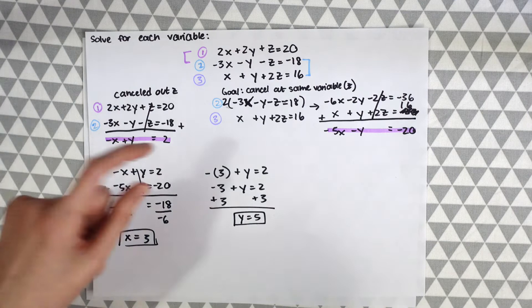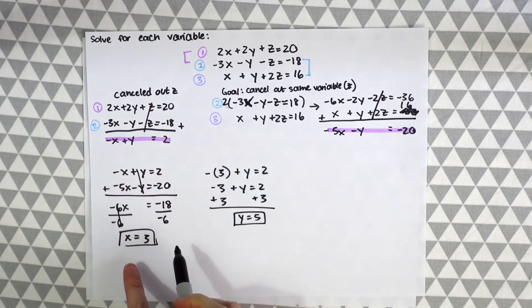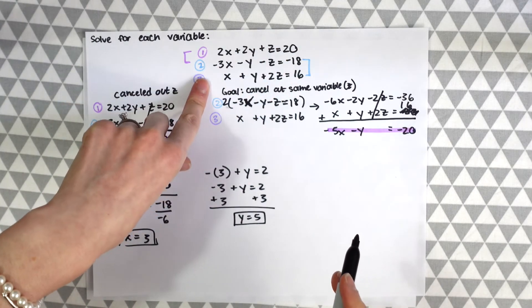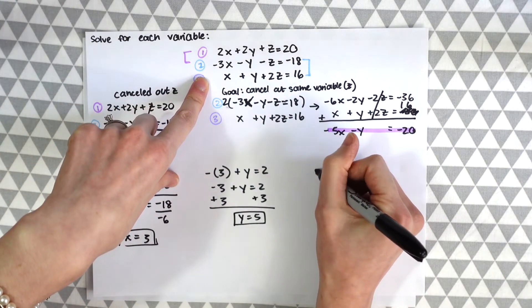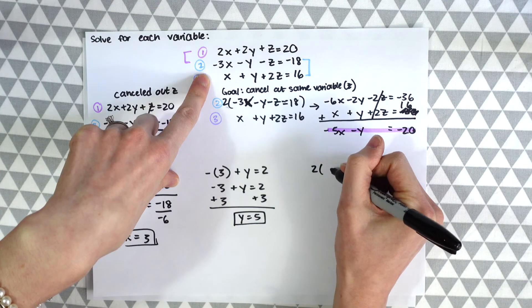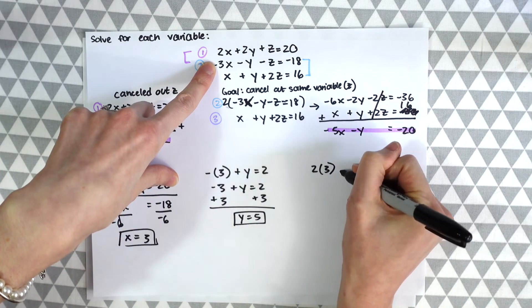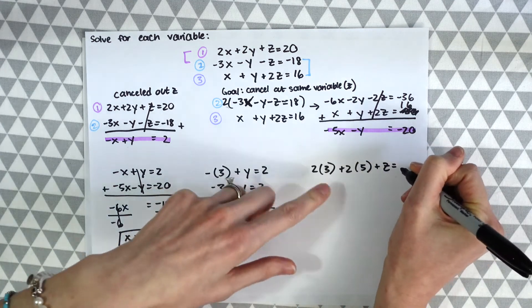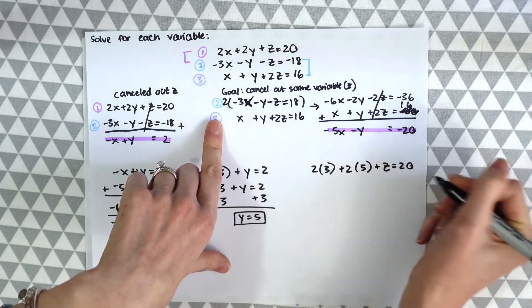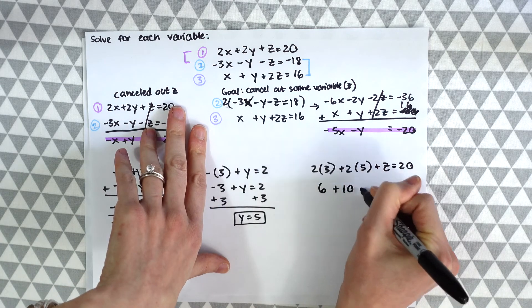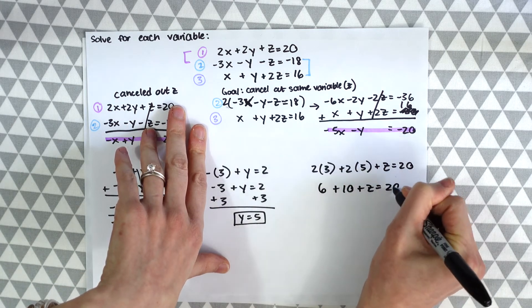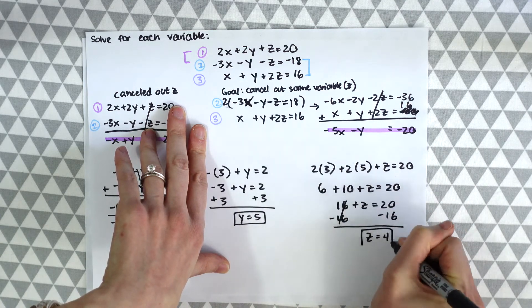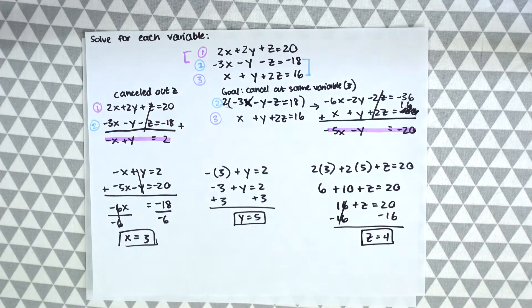So we're almost done. So now we have x equals 3, we have y equals 5. So let's go back to one of our original equations in the question and plug in 2 times 3 for x, plus 2 times 5 for y, plus z is the last variable we need to find equals 20. And then this gives us 6 plus 10 plus z equals 20, which gives us an answer of z equals 4.